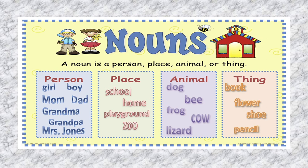Do you know what is a name? Do you have a name? Yes, everything, everyone has a name. A noun is a person, place, animal or thing. Actually, it means the name of any person. For example, girl, boy, mom, dad, grandma, grandpa, Mrs. Jones. Yes, when you speak these words, you are able to understand what you are talking about.